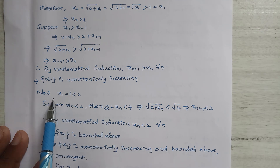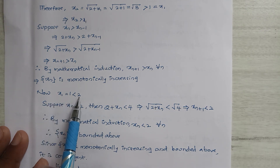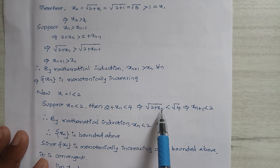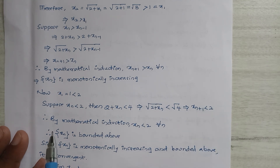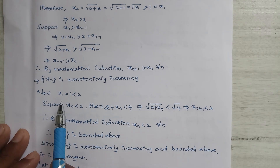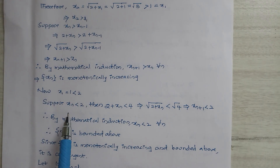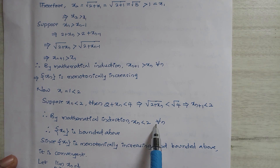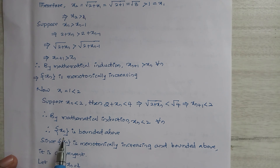Now x1 = 1 < 2. Suppose xn < 2; adding 2 to both sides gives 2 + xn < 4, so √(2 + xn) < √4 = 2, meaning xn+1 < 2. By mathematical induction the result is true for n = 1, and assuming true for n we proved it for n+1, therefore xn < 2 for all n. So xn is bounded above.